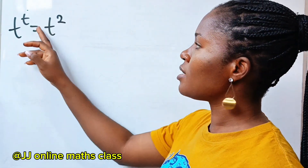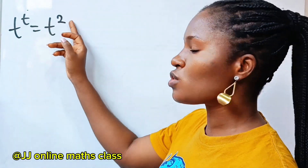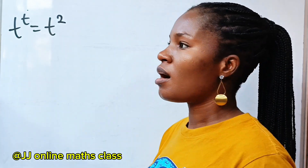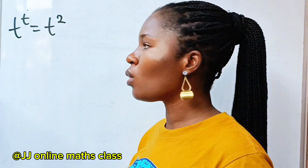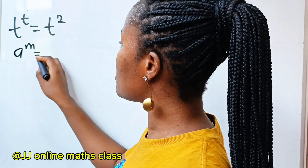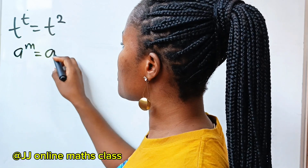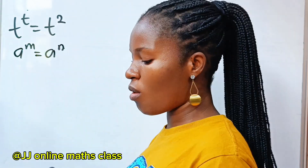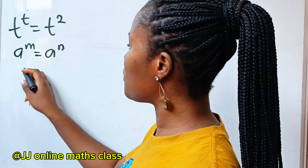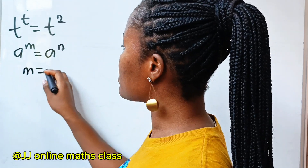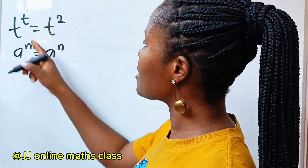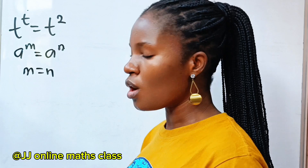By inspection, t is equal to 2. Using the exponential law, we state that if a to the power of m equals a to the power of n, then m is equal to n. So from here, we can say that t is equal to 2.